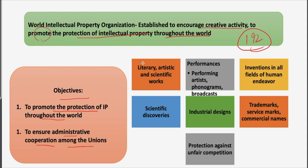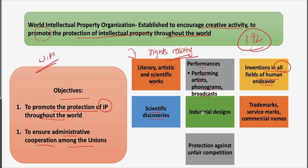Now this is a very important list we are going to discuss. Intellectual property includes the rights relating to: literary, artistic and scientific works; performances of performing artists, phonograms and broadcasts; inventions in all fields of human endeavor — notice the word 'all'; scientific discoveries; industrial designs; trademarks; service marks; commercial names; and protection against unfair competition. This is the list of rights relating to intellectual property covered by the World Intellectual Property Organization.